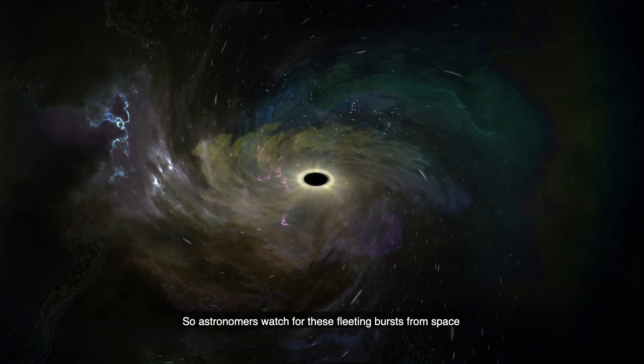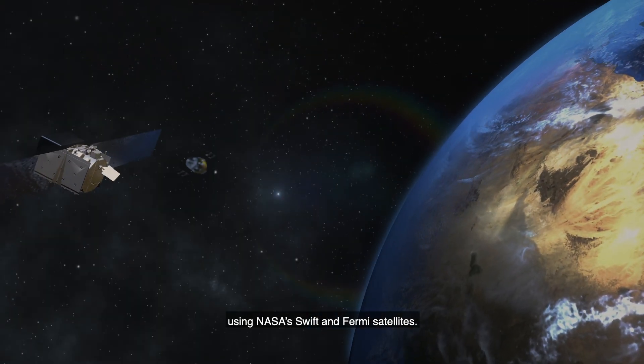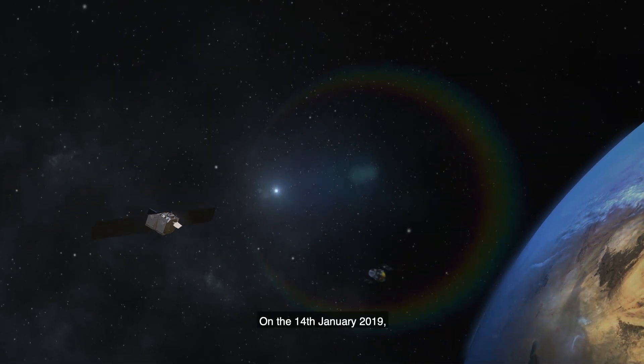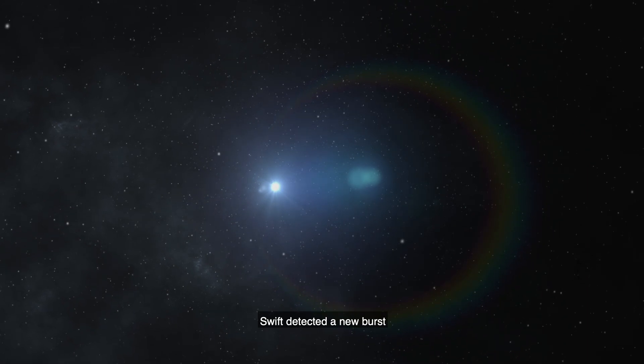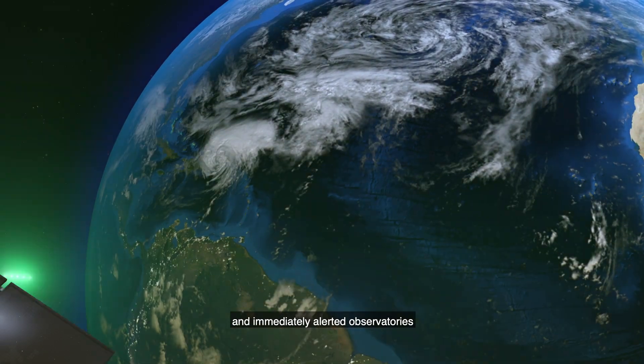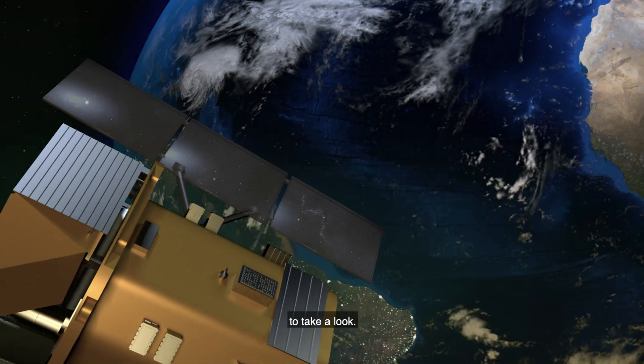So astronomers watch for these fleeting bursts from space using NASA's SWIFT and Fermi satellites. On the 14th of January 2019, SWIFT detected a new burst and immediately alerted observatories all over the world to take a look.